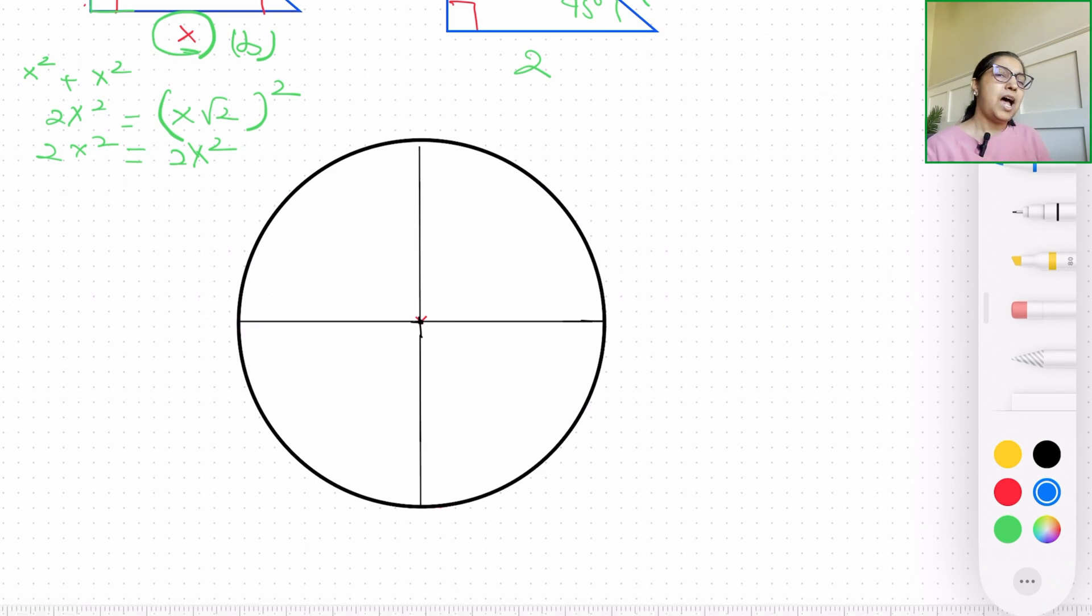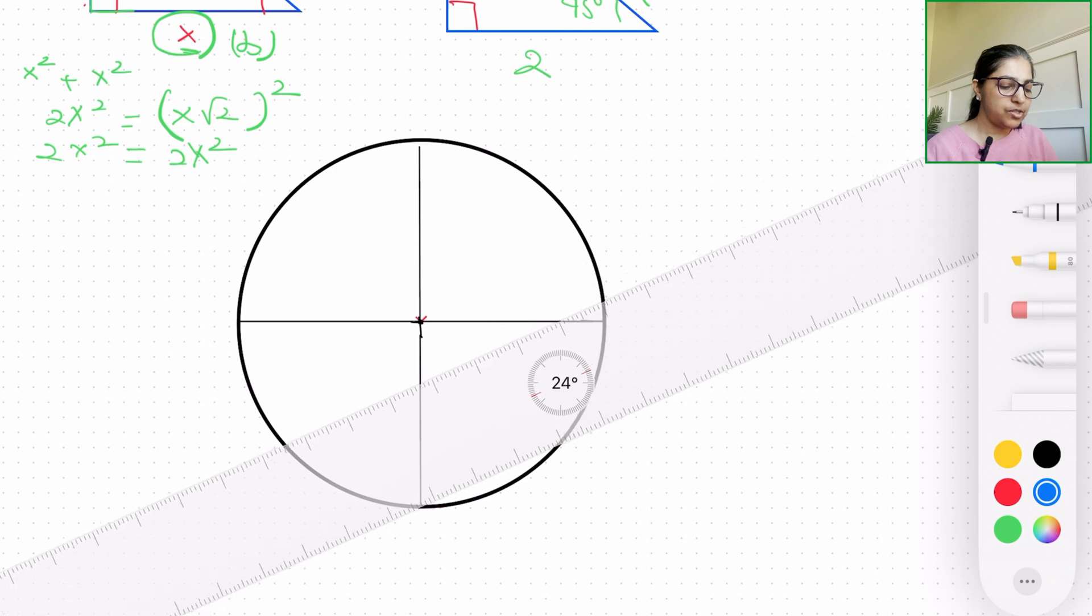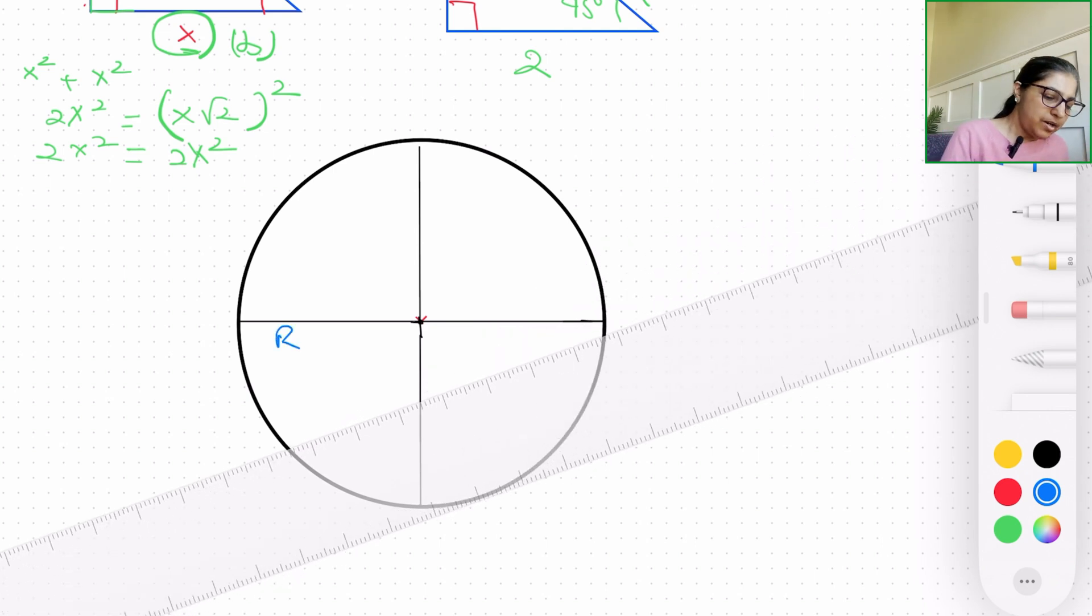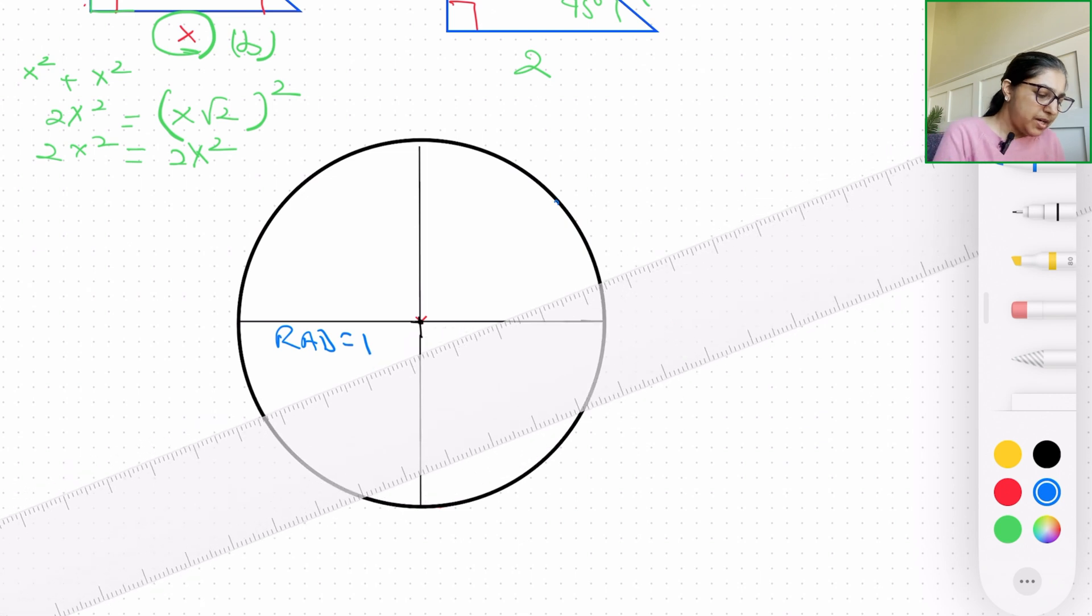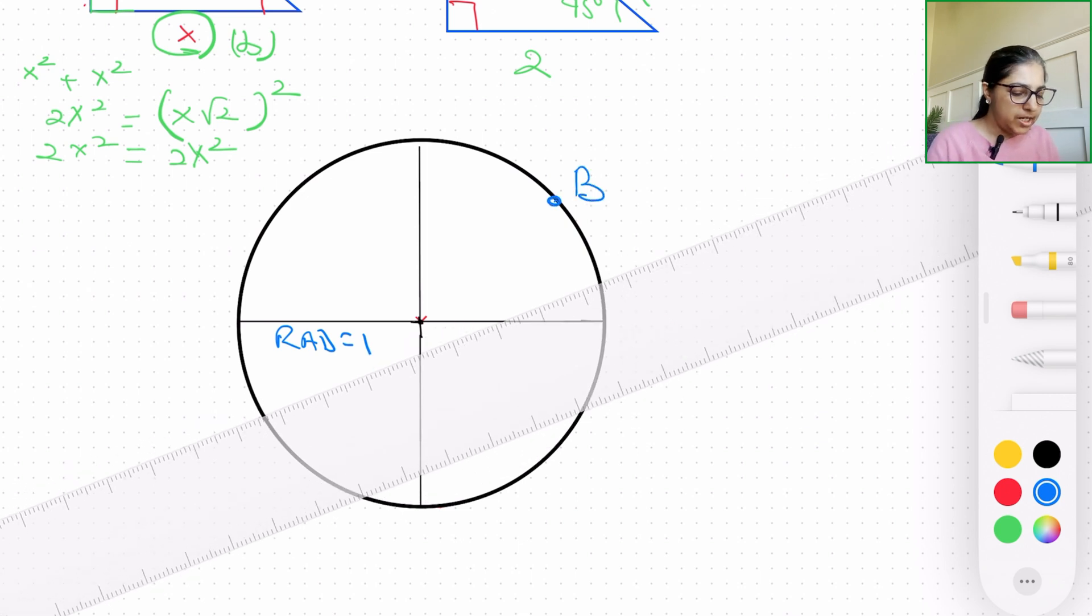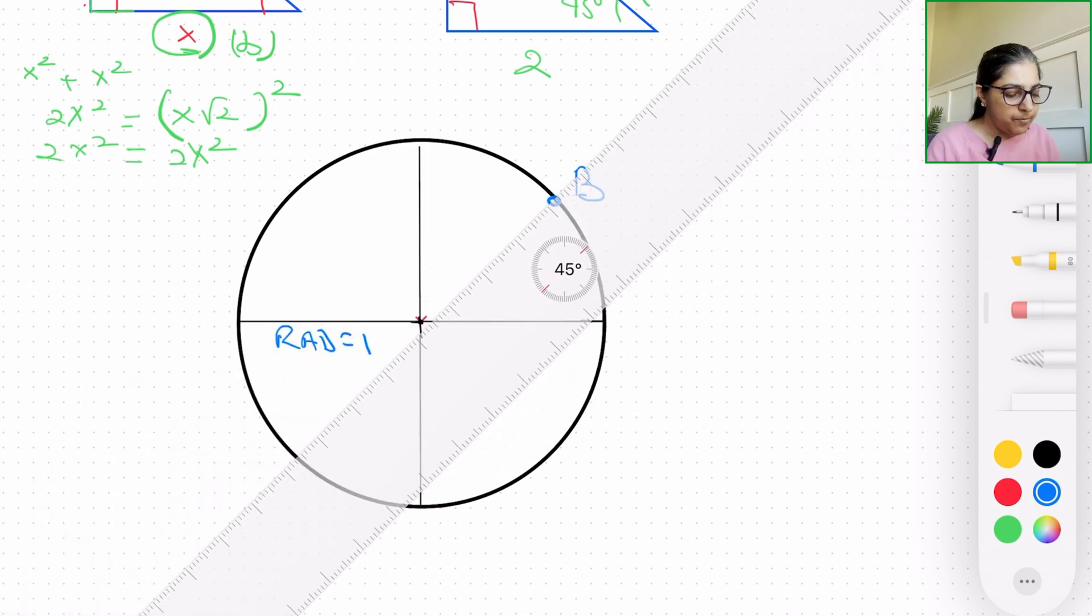Now one last thing that I also have referenced on one of my prior videos, and I'm going to show it to you here, is how these right angle triangles are always used in trigonometry. Now trigonometry and unit circles are together, right? So everything is with reference to a unit circle, which I've already drawn here, where radius is going to be 1 unit.